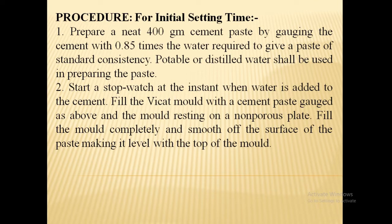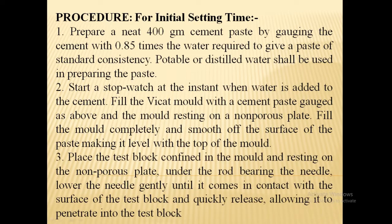Fill the Vicat mould with the cement paste gauged as above, with the mould resting on the non-porous plate. Fill the mould completely and smooth off the surface of the paste, making it level with the top of the mould. Now place the test block confined in the mould and resting on the non-porous plate under the rod bearing the needle.